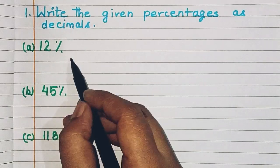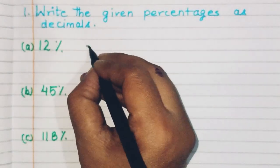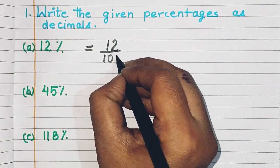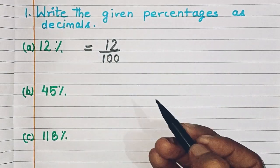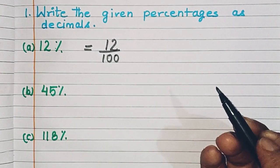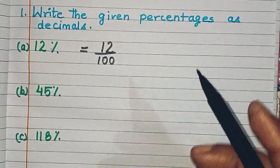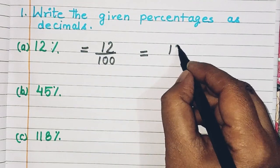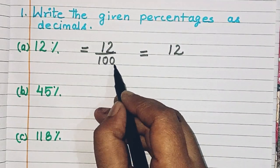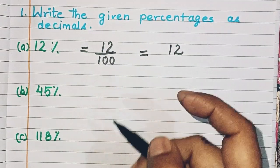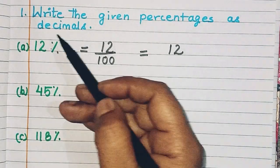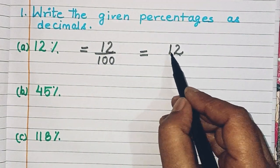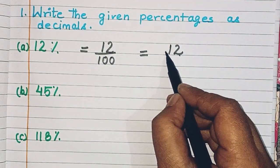Here we have 12%. So 12% becomes 12 upon 100. You can see 12 — you write 12. There are two zeros in 100, so it will always be divided by 100 because the percentage is always out of 100. So you count 1, 2 digits and then put a decimal point.